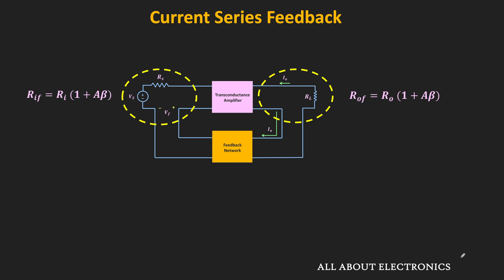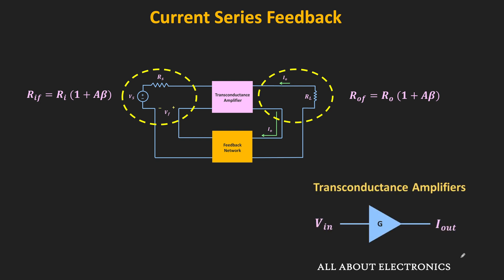This type of feedback amplifier is mainly suitable for transconductance amplifiers, because the input signal is the voltage signal while the output signal is the current signal. The unit of the transconductance gain — Iout divided by Vin — is the inverse of Ohm. Now let us see how the input and output impedance increases with feedback in this current series feedback amplifier.